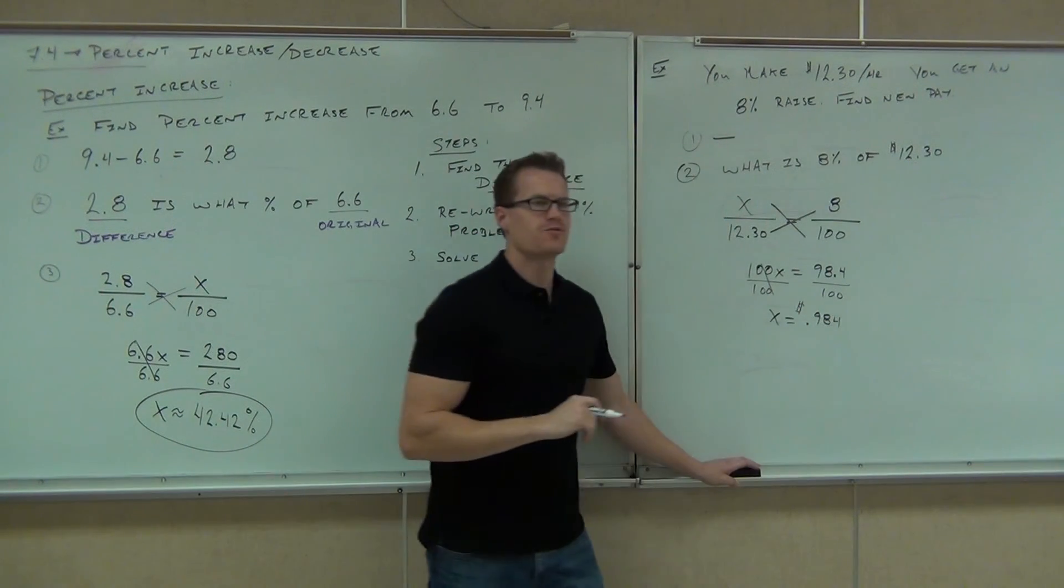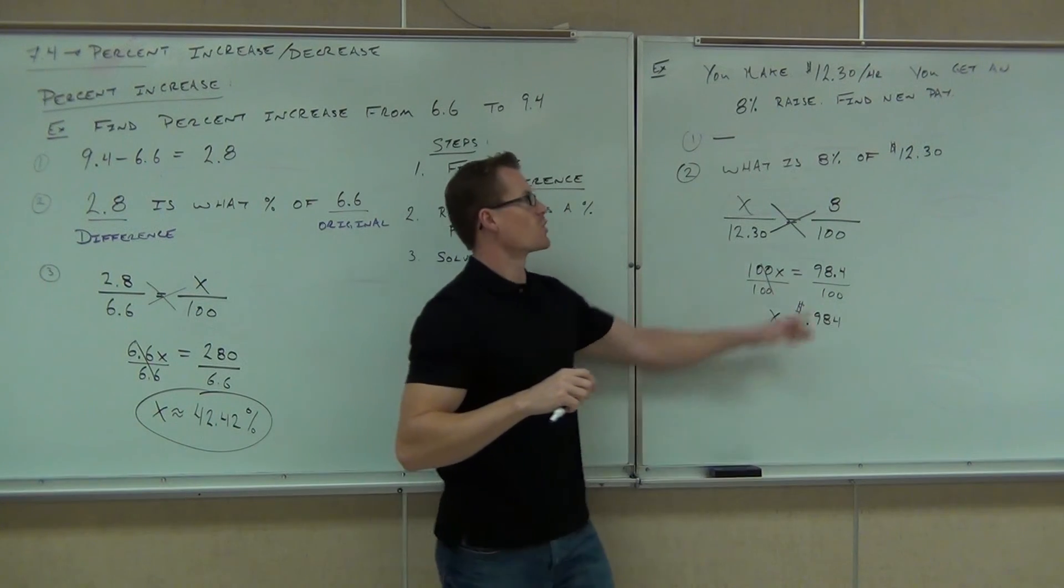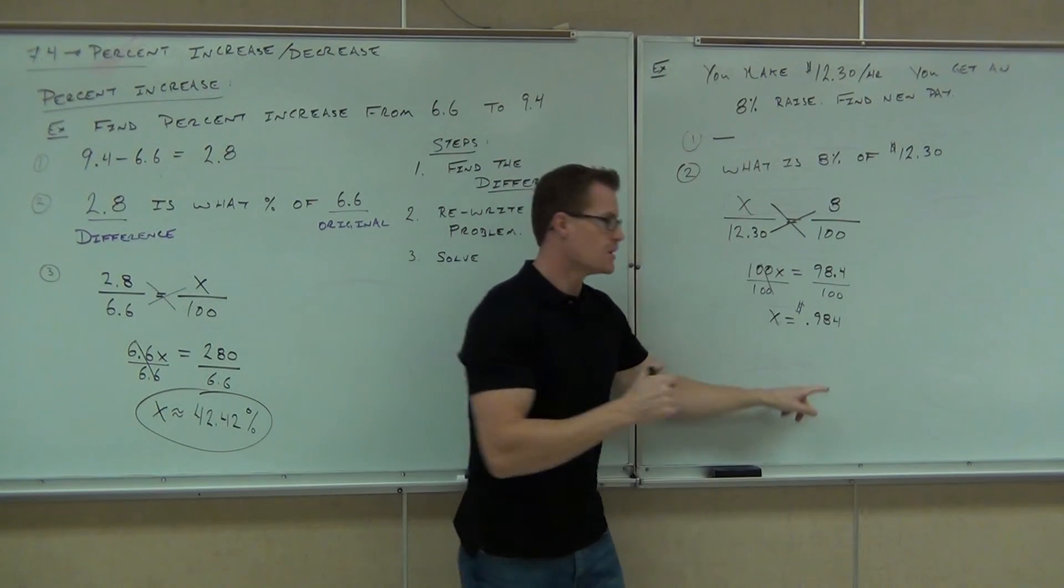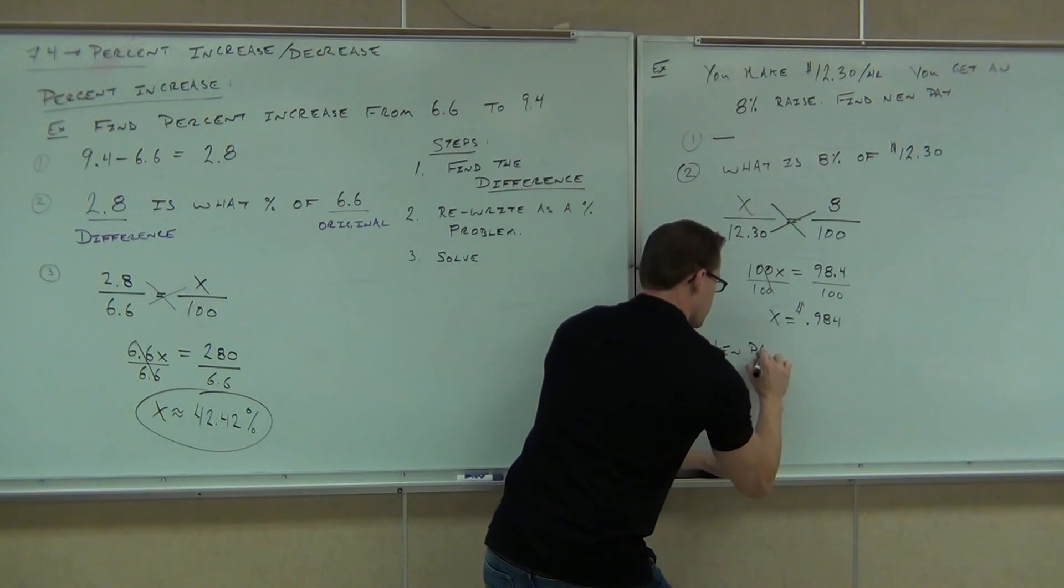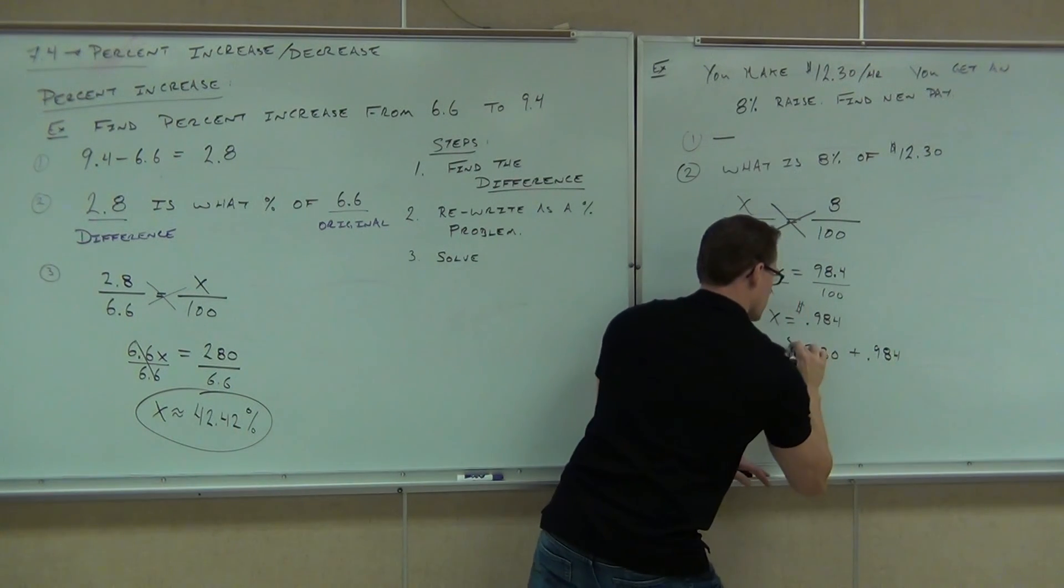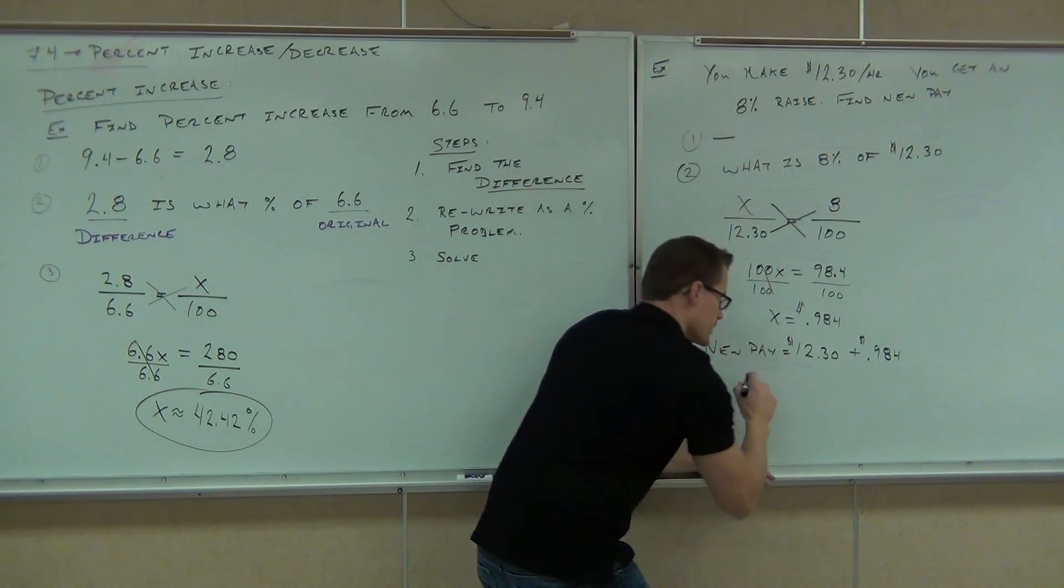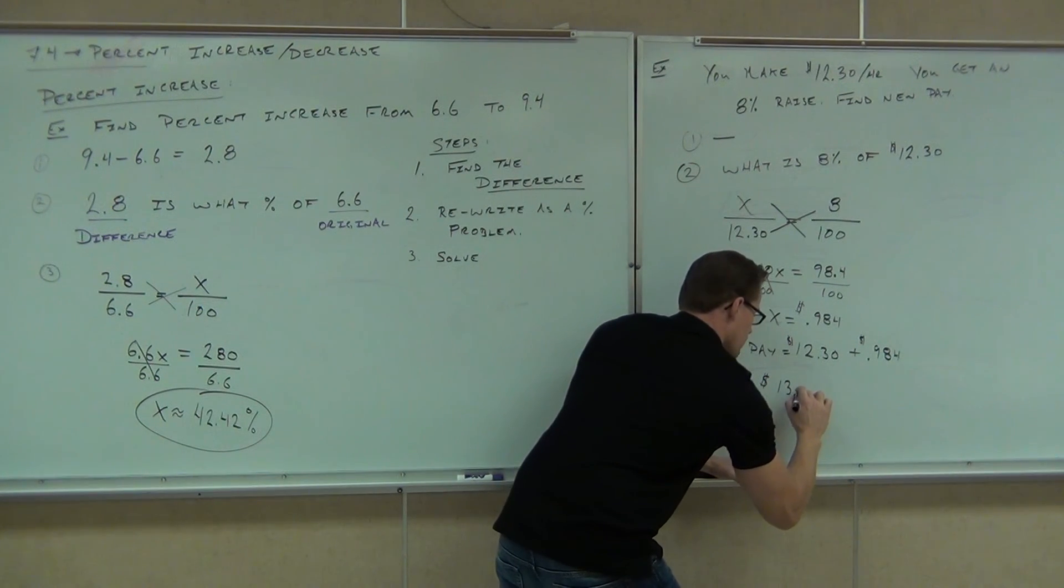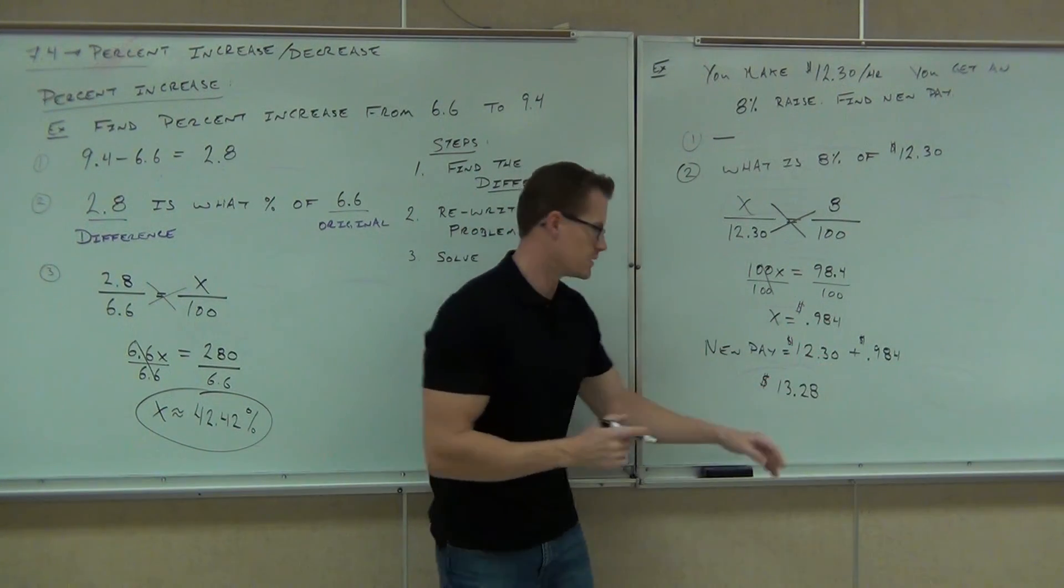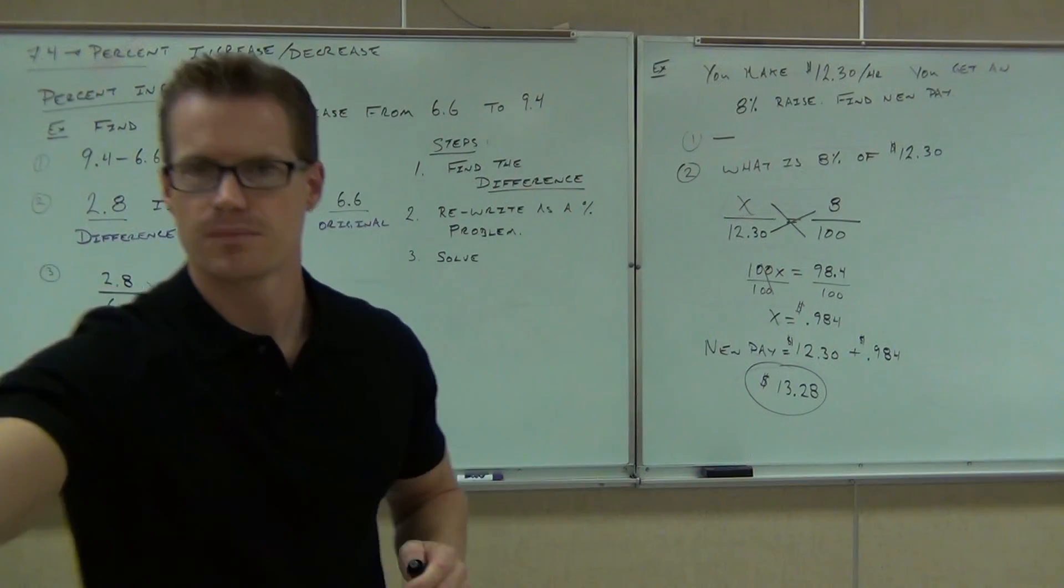So what's your new pay? Can you find your new pay? How'd you find 13.28? Your old was 12.30. You're getting an 8% increase. An 8% increase was 98 cents. So we add, new pay is $12.30 plus 0.984 cents. And what is that again? 13.28. Do you know what that 4 right there does? Does that 4 do anything for you? No. So we're going to round it. If it was a 5, we'd round it up. 13.28. How many people understood what we talked about today so far?